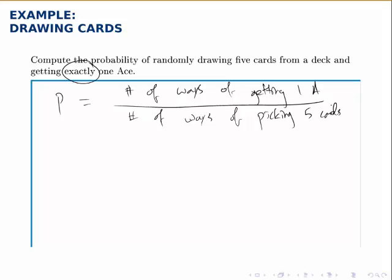Let's start with the denominator because it's a little bit easier. The number of ways of picking five cards, that's nothing more than a combination problem because we're picking and we don't care what order we get them in, we just care about which ones we got. So we're picking five cards out of a pool of 52.